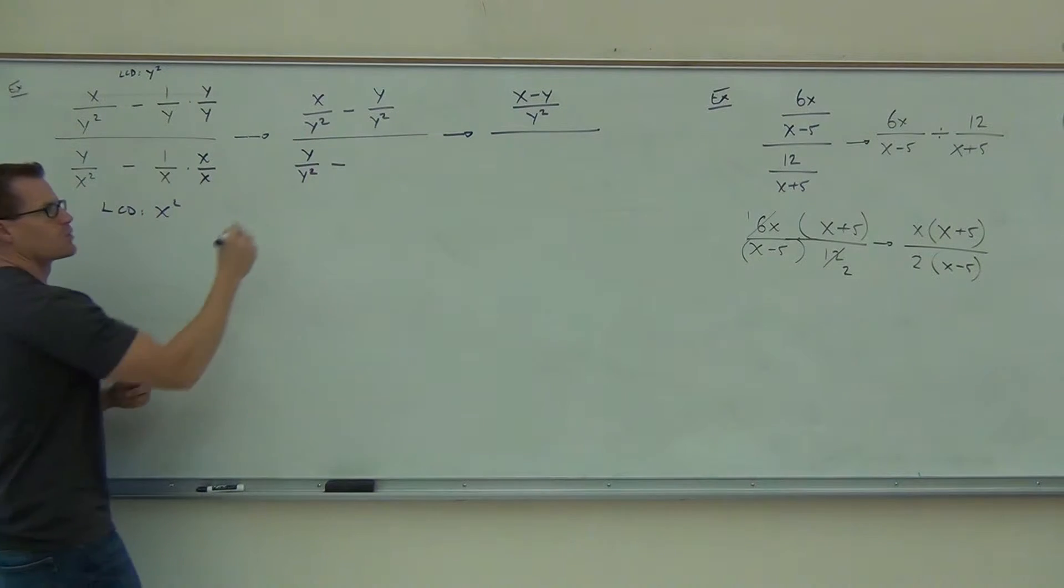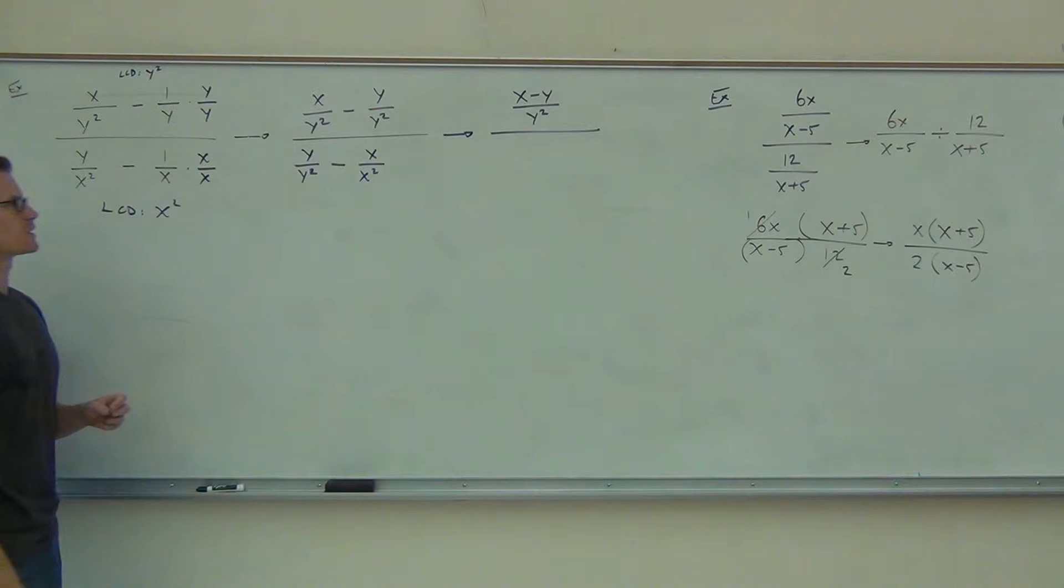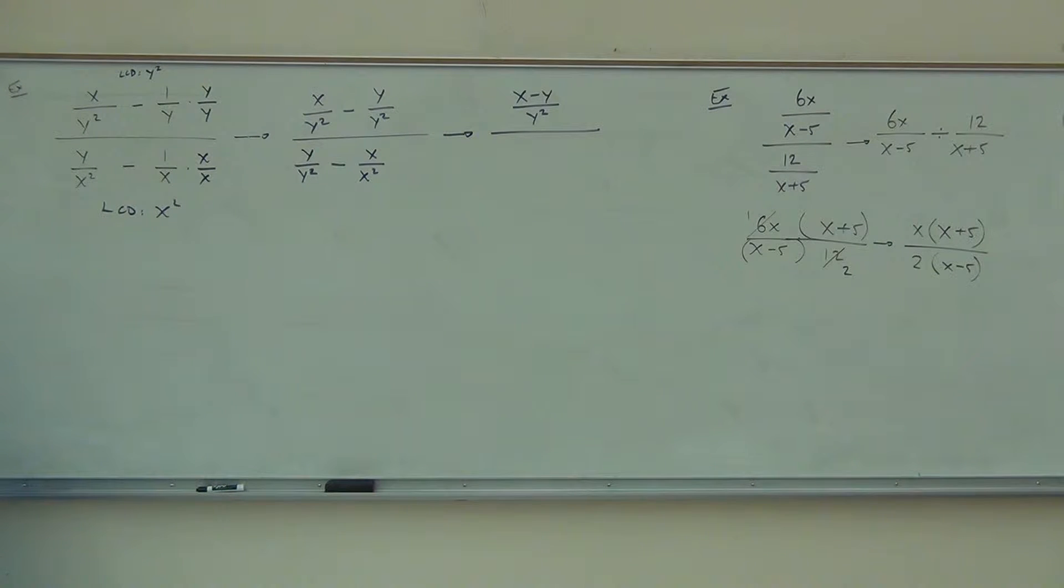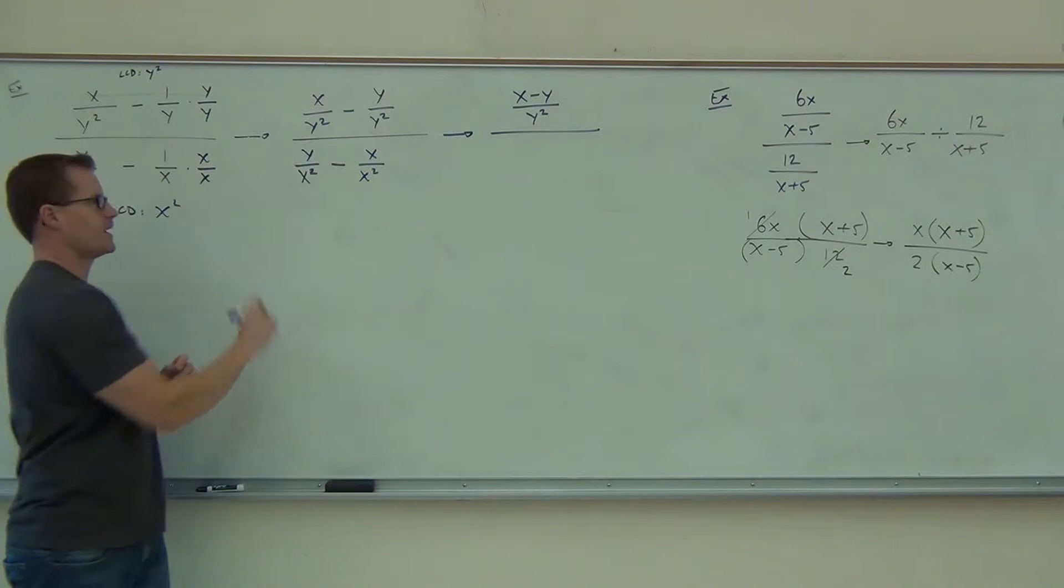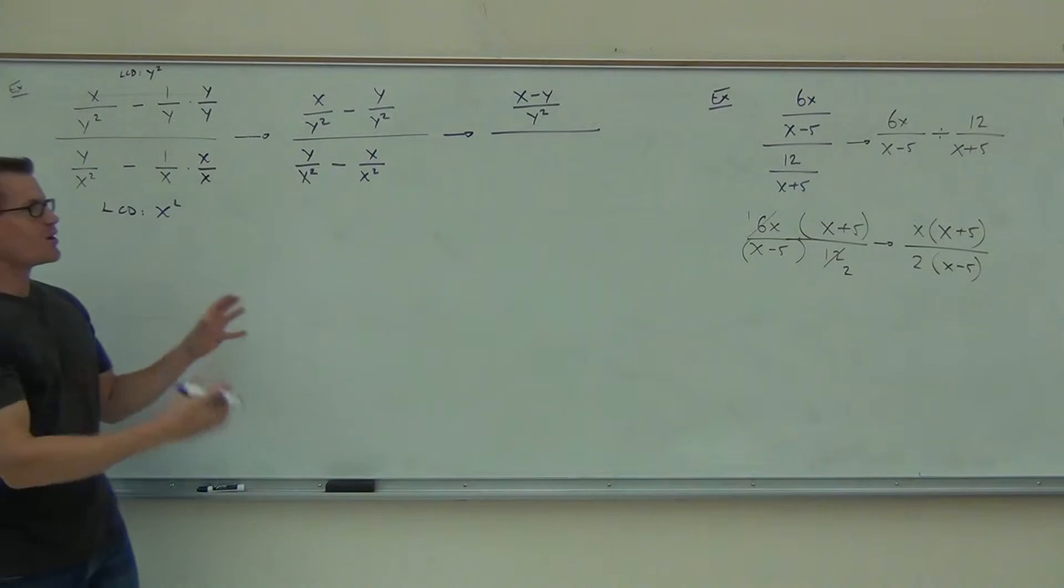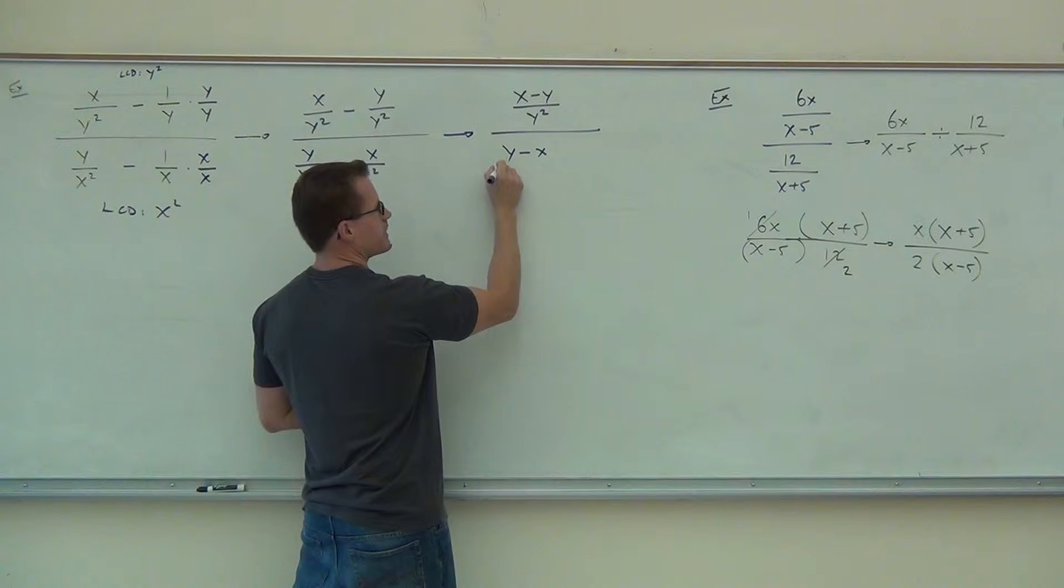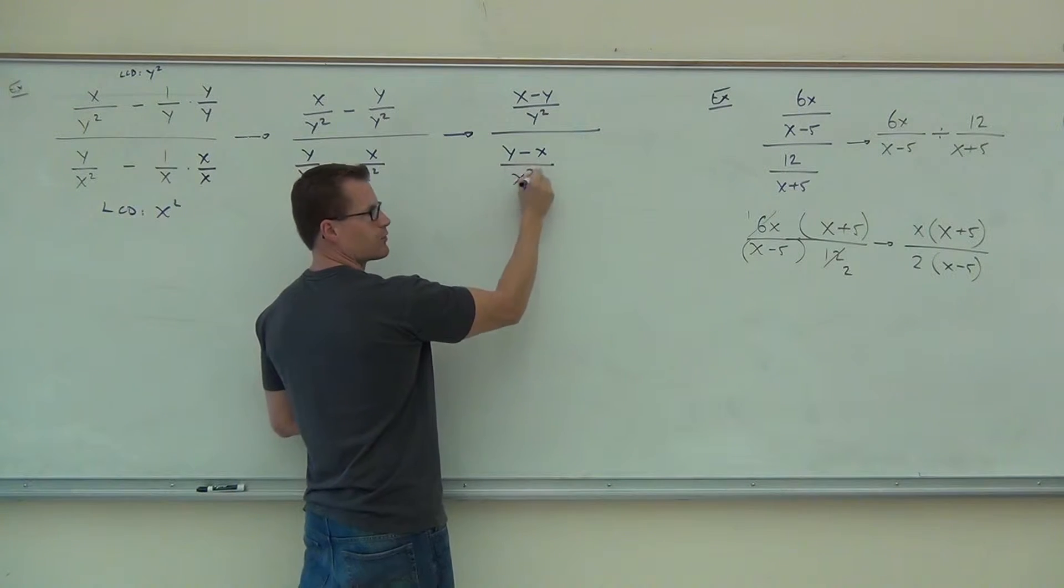That's the difference. So here we have the y over y squared. We have minus, we're going to get, what was that? X squared. Perfect. X over x squared. The first one. Y over x squared. I meant that. I would have found it eventually. On my next step. So now that we have the common denominator, we're great. We're going to do the y minus x over x squared.